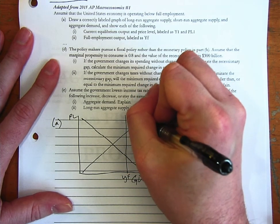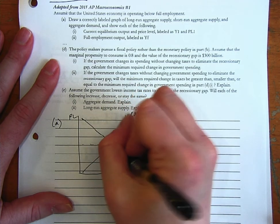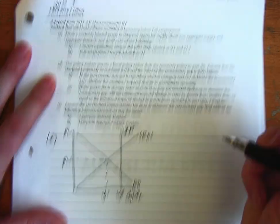We've got YF over here, LRAS here, and Y1 and PL1. And that's really quick.